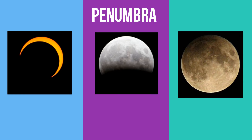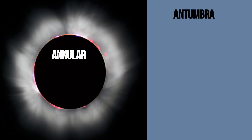And finally, if the Earth or Moon is found in the Antumbra part of the shadow, you get an annular solar eclipse. Here's what that looks like.